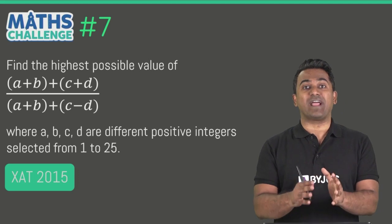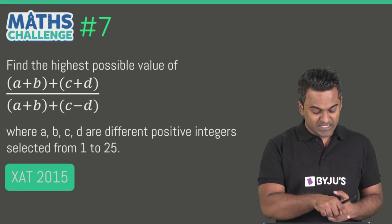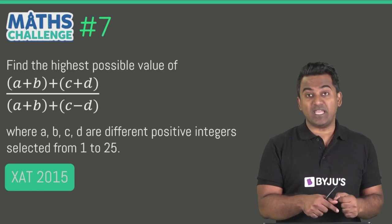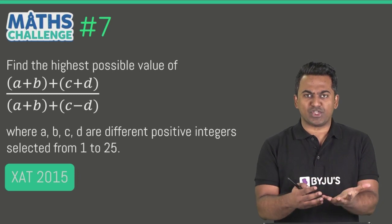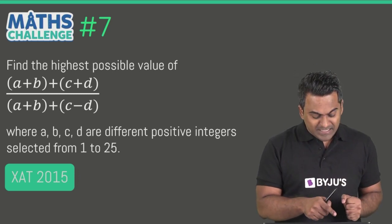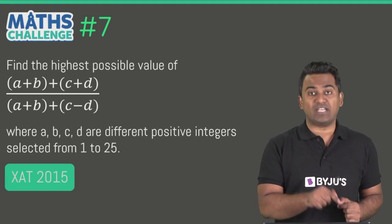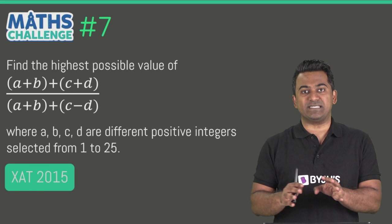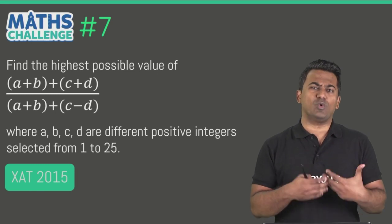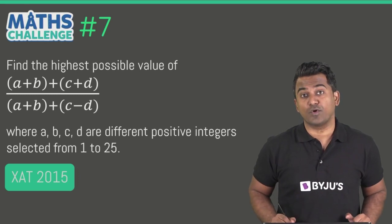So what do we have here? We have been given a fraction in terms of some variables: A plus B plus C plus D divided by A plus B plus C minus D. There is a condition that A, B, C and D are different positive integers selected from 1 to 25, including both 1 and 25 of course.